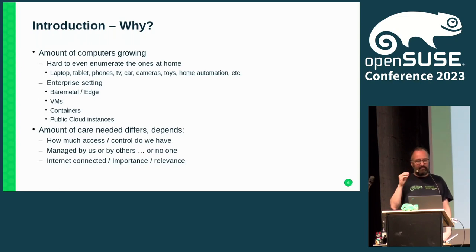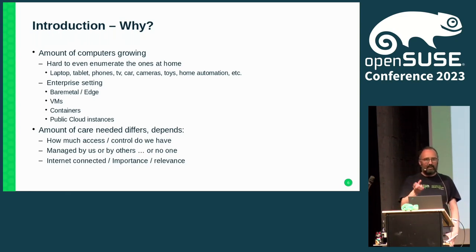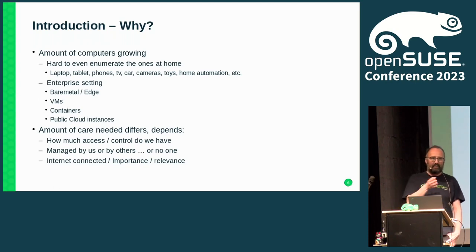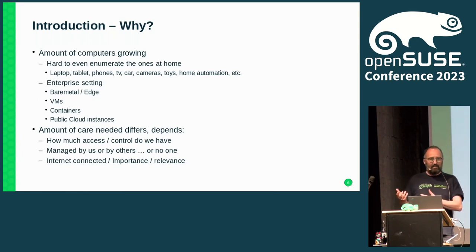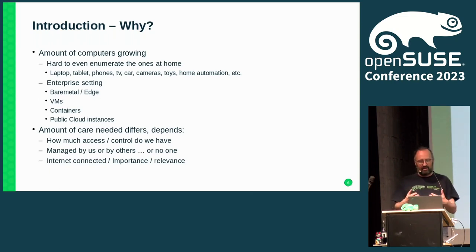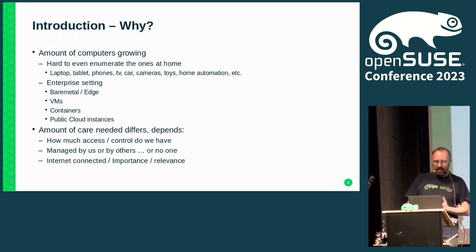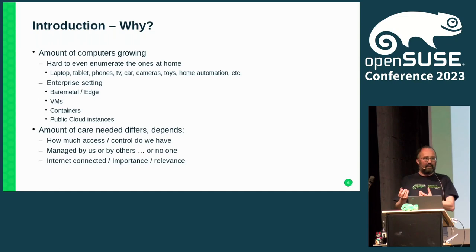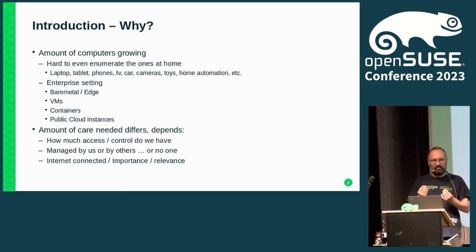You need to differentiate what kind of care or how much attention you need to put on those. If you're looking at home use, your laptop is your responsibility. But your TV you can perhaps update, perhaps it does that automatically, or perhaps it doesn't. The amount of care that you can put on computers differs. Some are managed by yourself, but most are actually managed by other people. The relevance also matters — your phone is really on the big bad internet, so managing this is of importance.